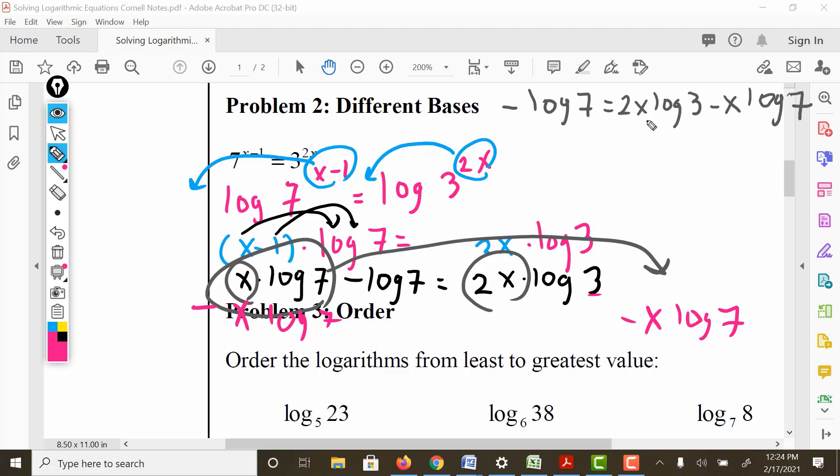I'm going to factor. Both of these have an x. I'm trying to get the x by itself. So I'm going to factor out the x: x times (2 log 3 minus log 7). And then I want to get the x by itself, so I divide both sides.